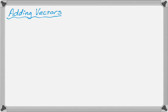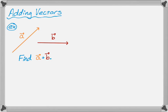Now we want to add some vectors, and this is easier to do than it is to talk about, so we're going to do an example. We have vector a and vector b, and you can see their initial and terminal points. What we want to do is find a plus b. So I'm going to start with vector a — I'll sketch it over here. It has exactly the same length and direction as the given vector a, so it is the same vector.